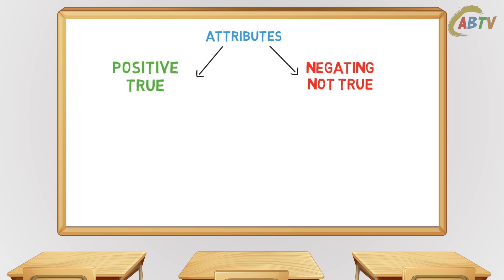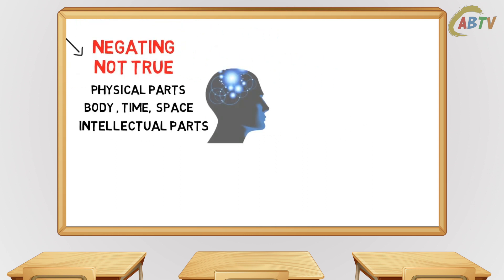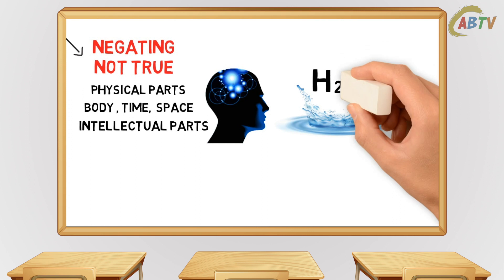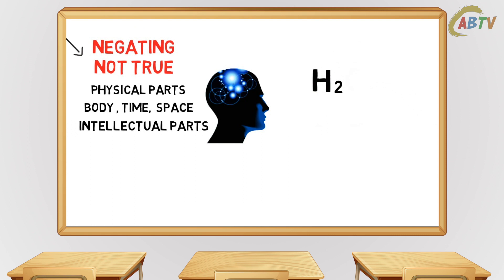So far we have proven some of the attributes of this necessary existence, such as: it is independent and the first cause; it has no beginning and no end and is eternal; it cannot be made up of physical parts; it cannot have a body; it cannot be bound by time and space; and it cannot have intellectual parts or an intellectual definition. So what does that mean? It means we can negate and destroy the definition in our minds. For example, we say H2O as in water — if I take out the O, oxygen, in my mind, we won't have water anymore. I would have destroyed that definition. An intellectual definition can only be given to something that is made up of parts.